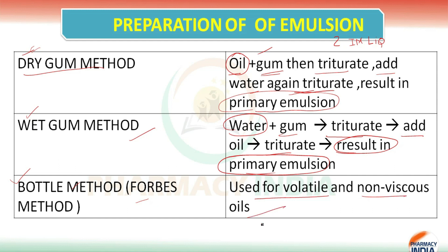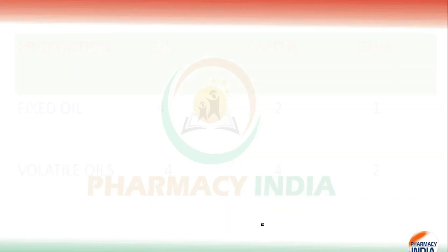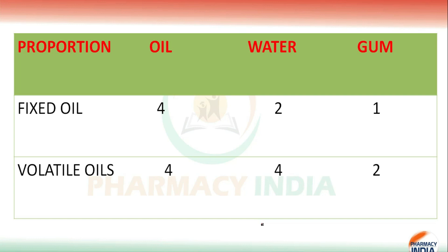So to summarize, there are three methods — dry, wet, and bottle methods — for the preparation of emulsion. One important thing about emulsion is the proportion of oil, water, and gum used for fixed oils versus volatile oils. This ratio may be directly asked in your exam.